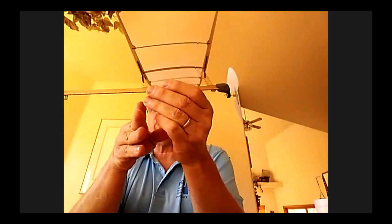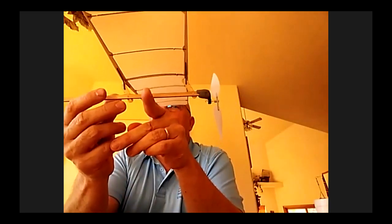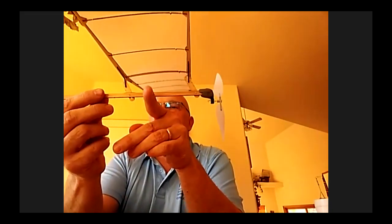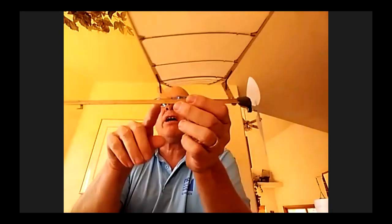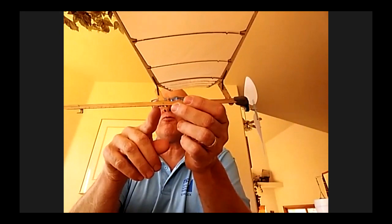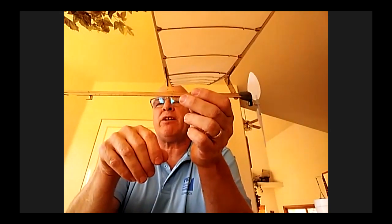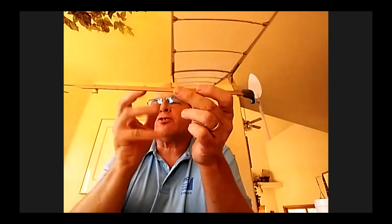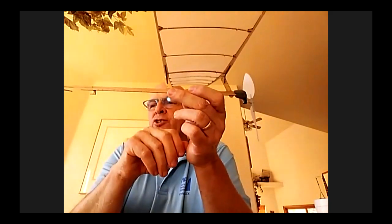The center of gravity on this plane happens to be in the back third of the wing. This year's Science Olympiad plane, because it's got a larger stab, the center of gravity is going to be somewhere between the rear wing post and maybe up to two or three centimeters behind that. Setting it at the rear post or a centimeter back is a good starting point.